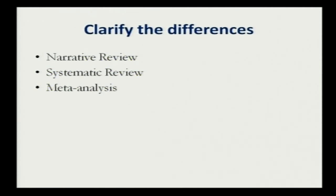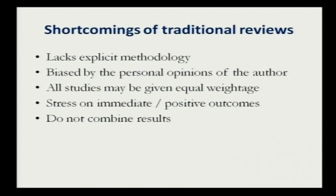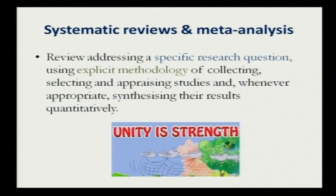The shortcomings of a traditional review are: it lacks explicit methodology, it is biased by the personal opinion of the author, all studies may be given equal weightage, stress may be on positive outcomes, and it does not combine results. Systematic review and meta-analysis address a specific research question using explicit methodology.